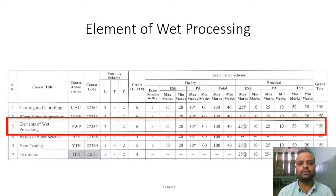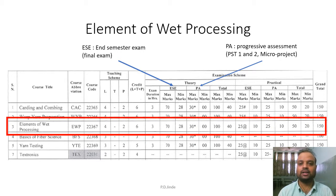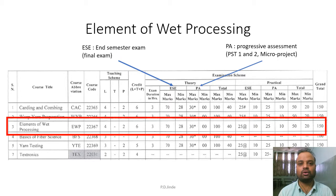The total 100 marks is distributed into theory and practical sections. The theory marks are further distributed into ESE and PA. ESE carries 70 marks — ESE means End Semester Examination — and PA means Progressive Assessment, which has a weightage of 30 marks. The PA is a combination of marks from PSD 1, PSD 2, and micro projects. Practicals also carry a weightage of 50 marks, further divided into 25 marks internal examination and 25 marks allotted for journals.